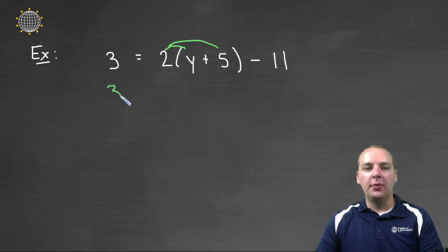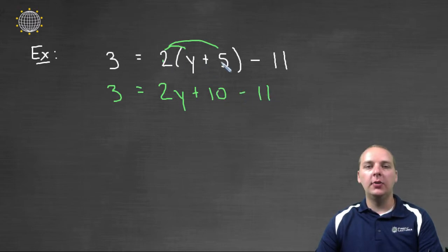So we'll have 3 equals, 3 is already simplified, we'd have 3 = 2y + 10 - 11, because 2 times y and 2 times 5, 2 times 5 makes 10. I see some like terms over here on the right-hand side, plus 10 minus 11, so I'll have 3 = 2y, and plus 10 minus 11, those are like terms, they're both constants, would give us minus 1.